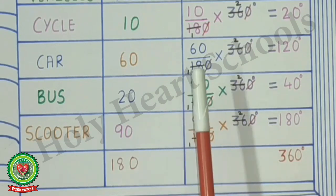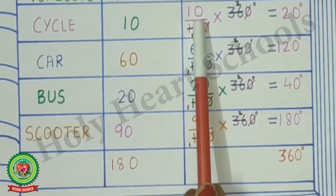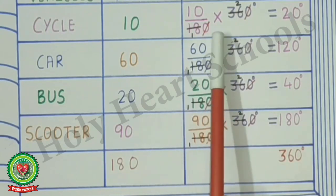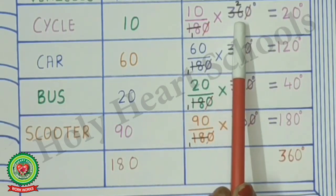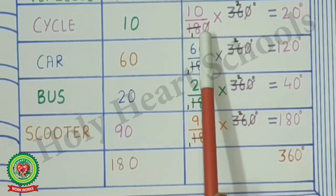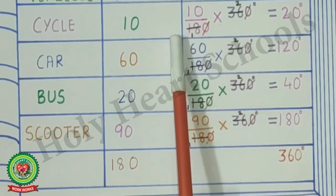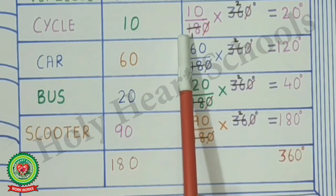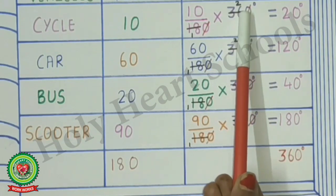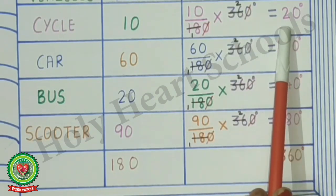In the third column, for the first value: 10 upon total value 180, multiplied by 360 degrees. We do cancellation — cut the zeros, and on the 18 times table, 18 comes at 1 and 36 comes at 2. Now multiply 10 by 2, giving us 20 degrees. So the first central angle is 20 degrees.